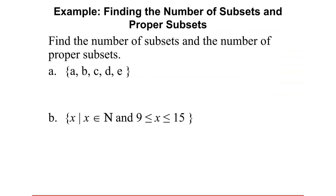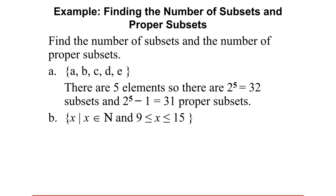Using the formula we derived, let's find the number of subsets and proper subsets of the given sets. For letter A, the set has 5 elements: {1, 2, 3, 4, 5}. The number of subsets is 2 to the 5th, and the number of proper subsets is 2 to the 5th minus 1. Since 2 to the 5th equals 32, the number of proper subsets is 32 minus 1, which is 31.